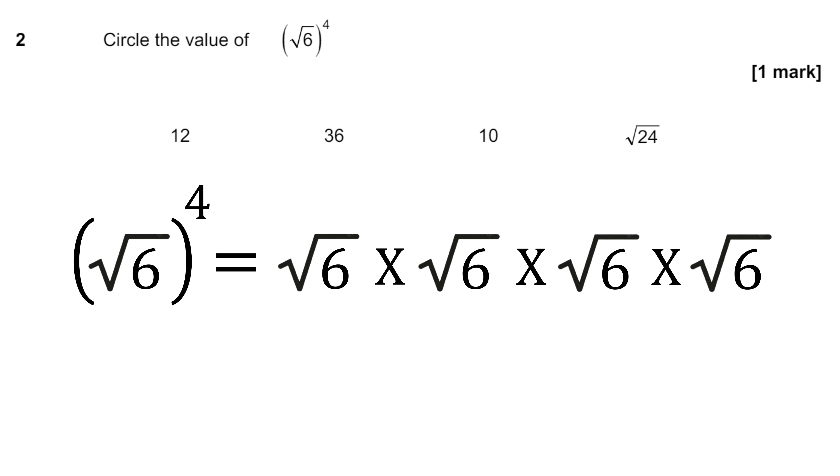And from there I treated the square root of 6s almost as two sets. So I took the first square root of 6 times square root of 6 and multiplied them together to get 6 and I did the same for the second set giving me 6 times 6 because if you have the square root of anything,